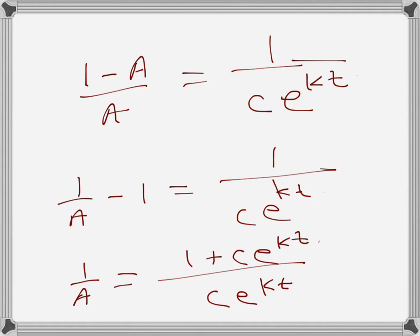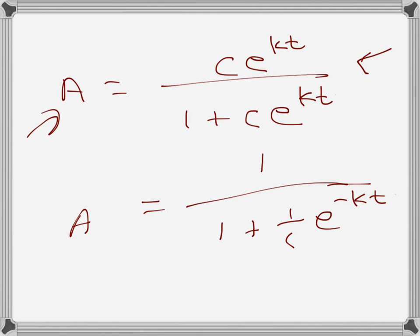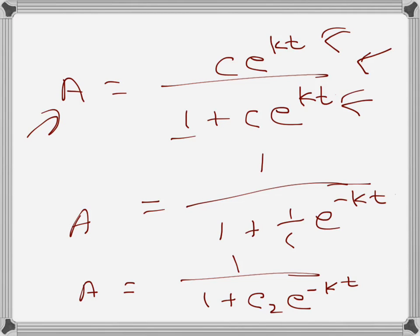Dividing both the numerator and denominator by C·e^(kt), the expression for A becomes A = 1 / (1 + C₂·e^(-kt)), where C₂ = 1/C. We now need to find the constants C₂ and k using the two given conditions.